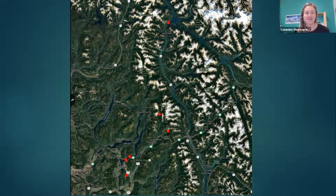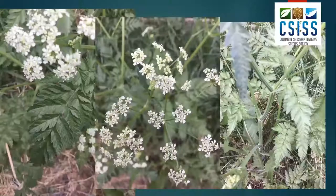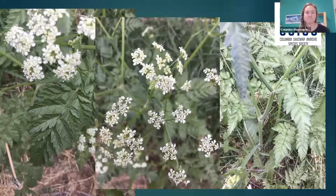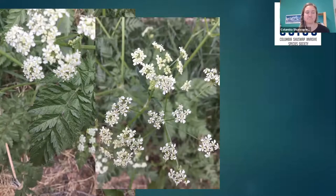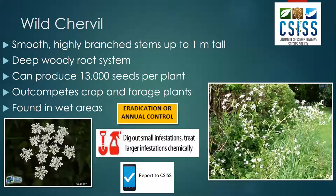Someone asked about where giant hogweed comes from in its native range. It comes from the Caucasus Mountains in West-Central Asia, where it grows in subalpine meadows and forest edges.